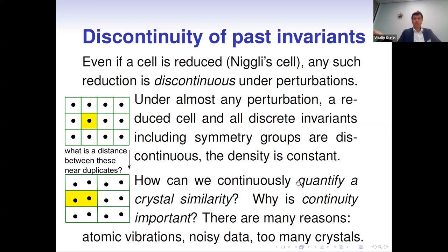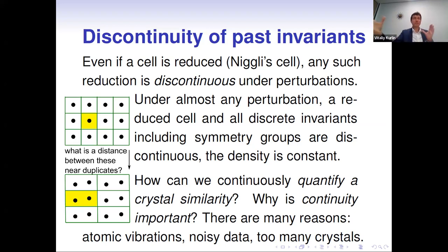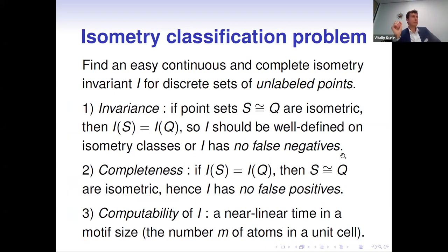Continuity is important because atoms vibrate, proteins get damaged by radiation, and our data is noisy. There are too many crystals — 230 classes of space groups in three-dimensional space was a great 19th-century discovery by Fedorov and Schoenflies — but now we are in the 21st century where the Cambridge Structural Database contains more than 1.2 million structures, and 230 groups are not enough to distinguish them.